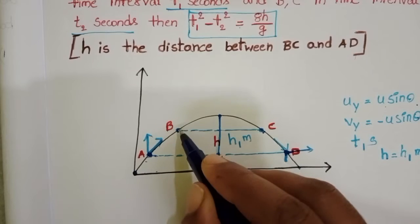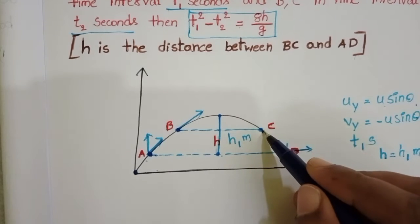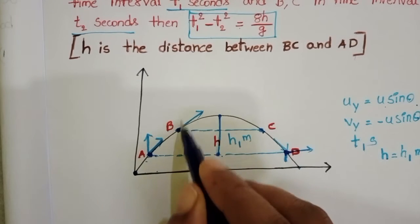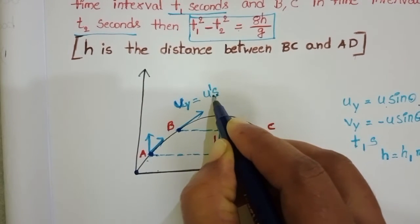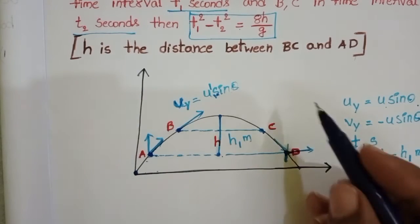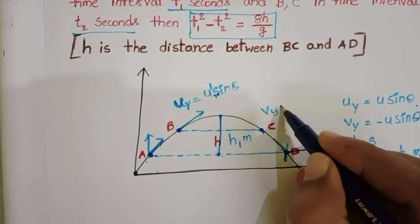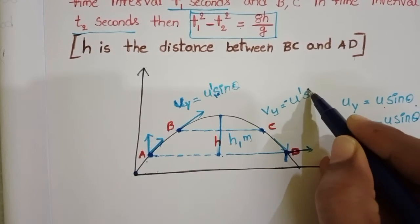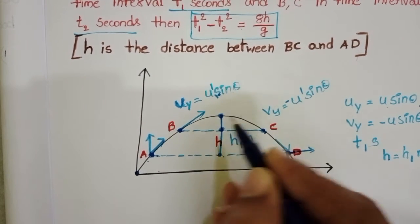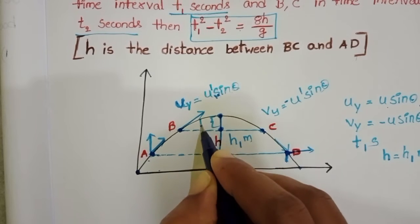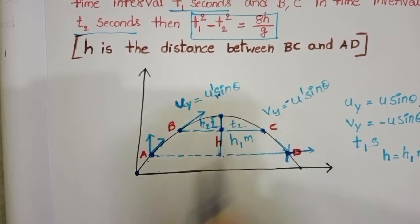Similarly, imagine when a body is projected from point b — it strikes the ground with the same velocity. The vertical component of the velocity is u dash sin theta at launch, and vy equals u dash sin theta at the strike point. From point b to the maximum height, let that height be h2. The projectile crosses points b and c within time t2 seconds.